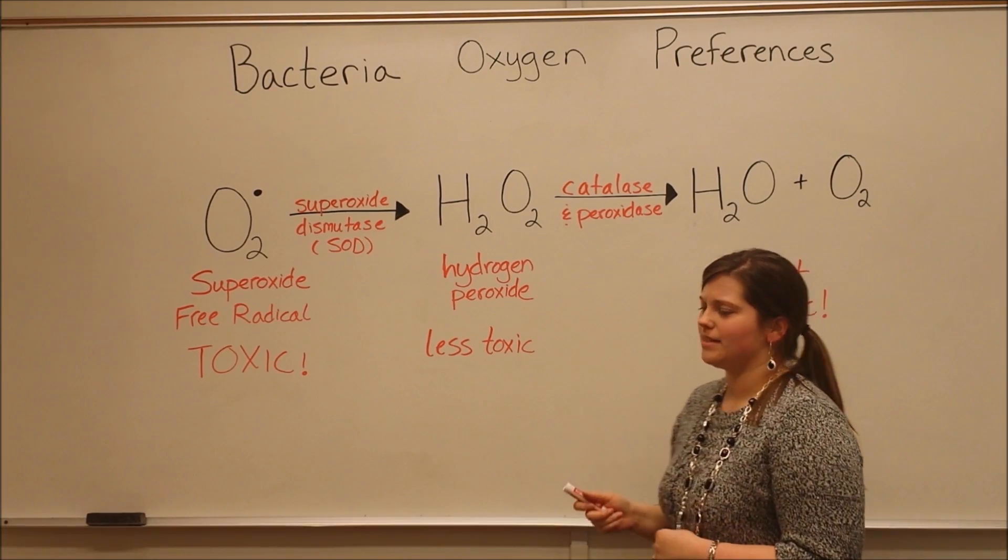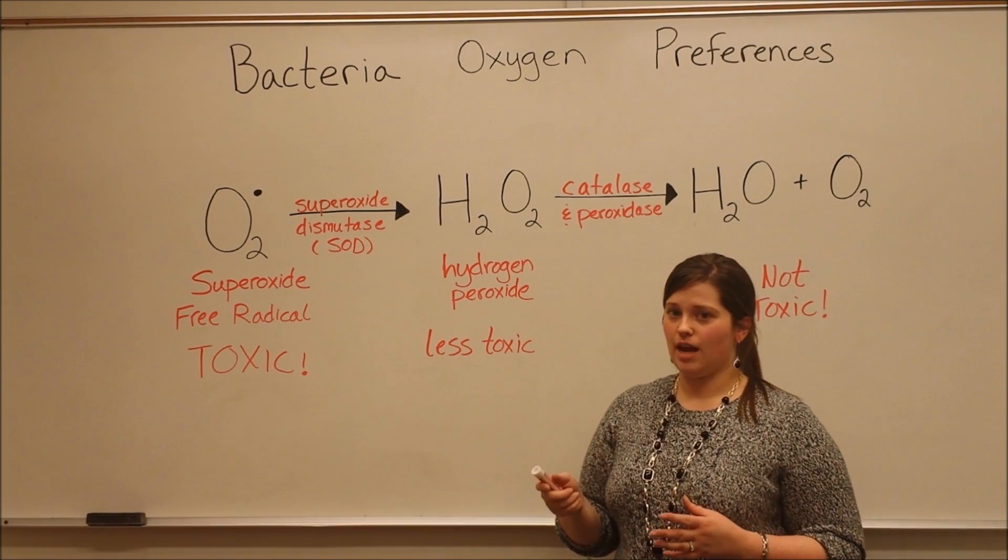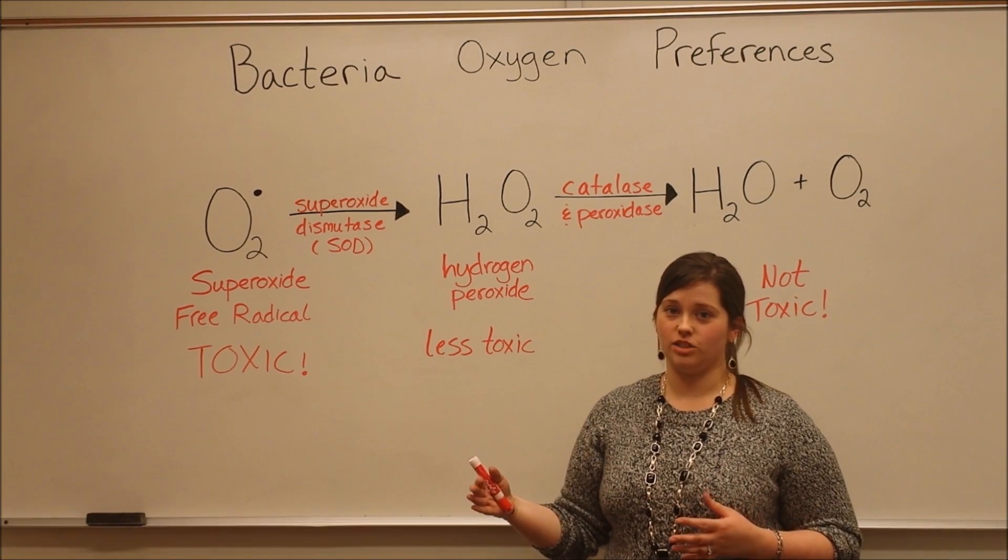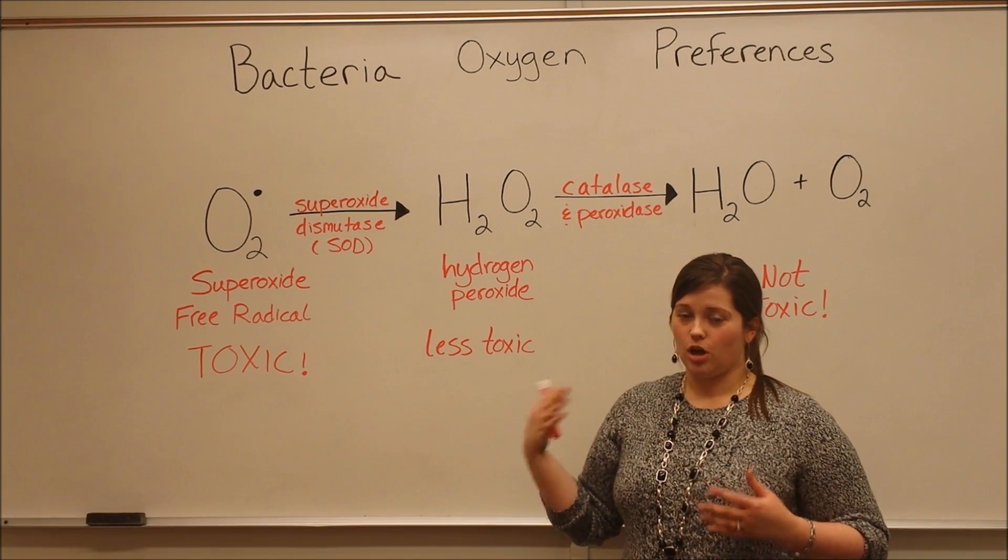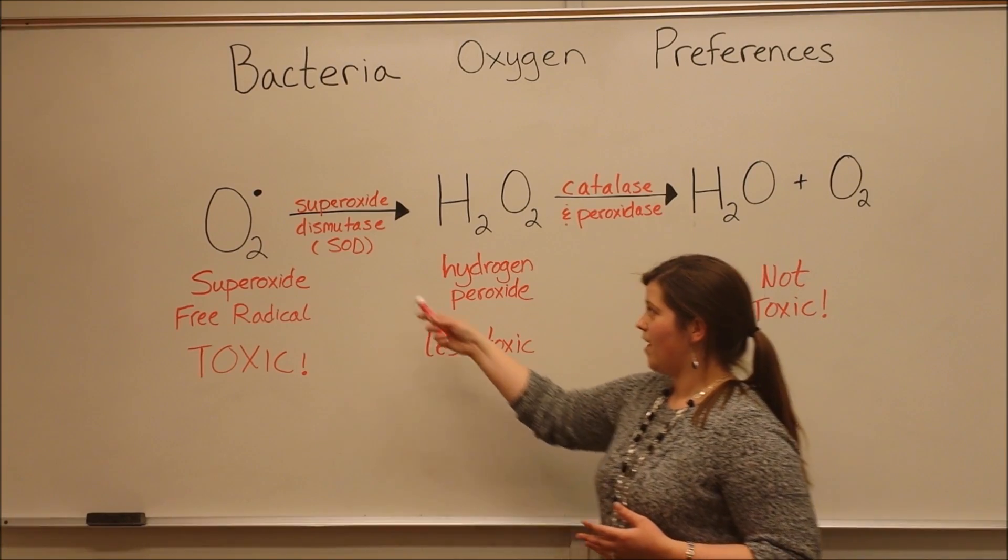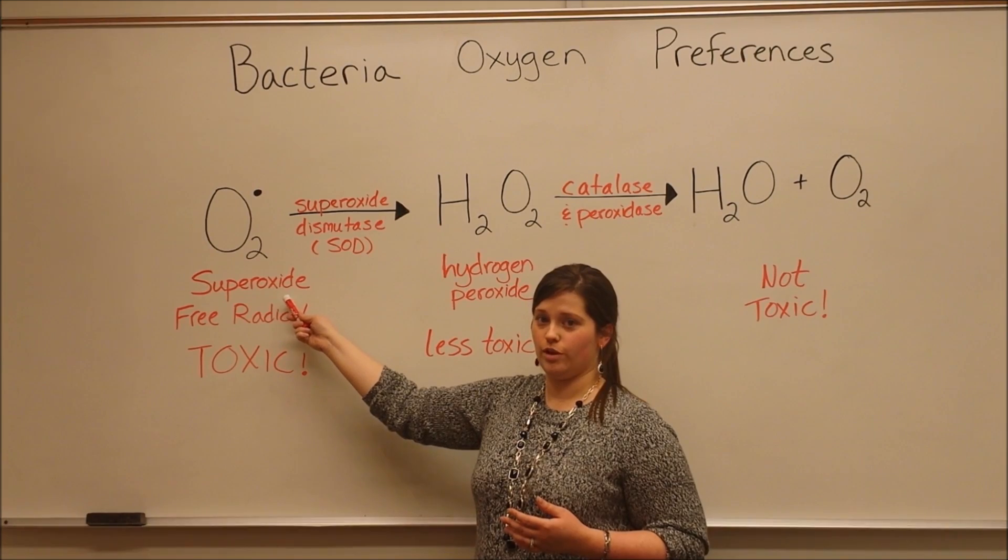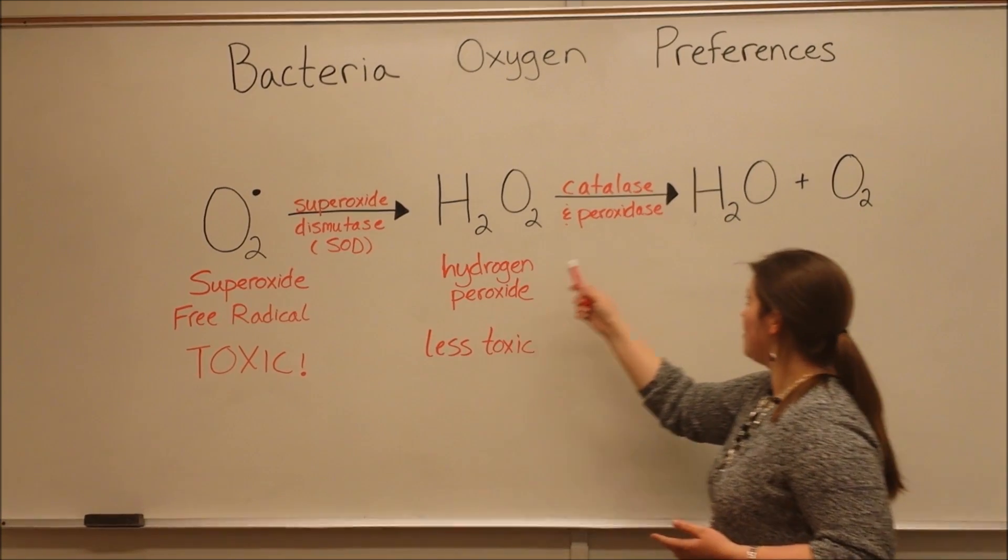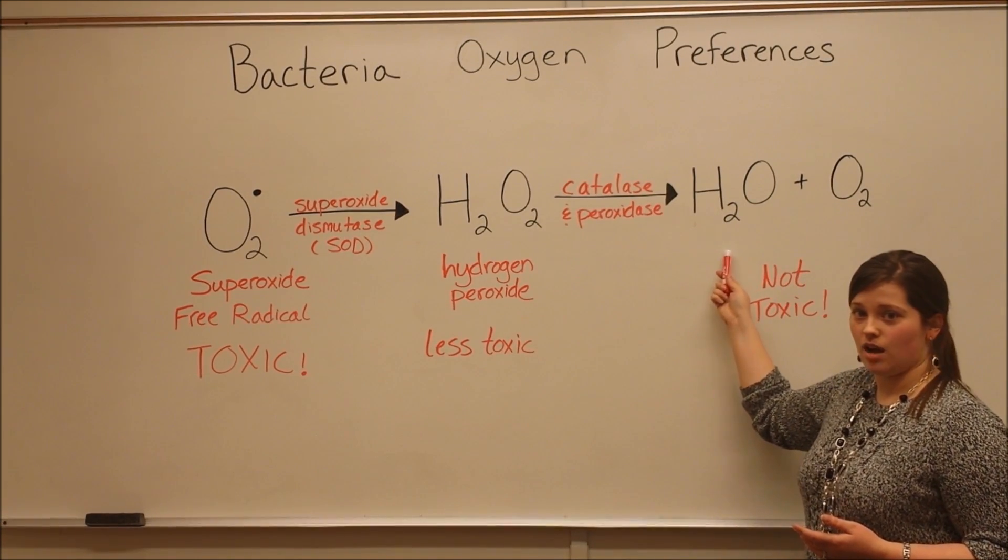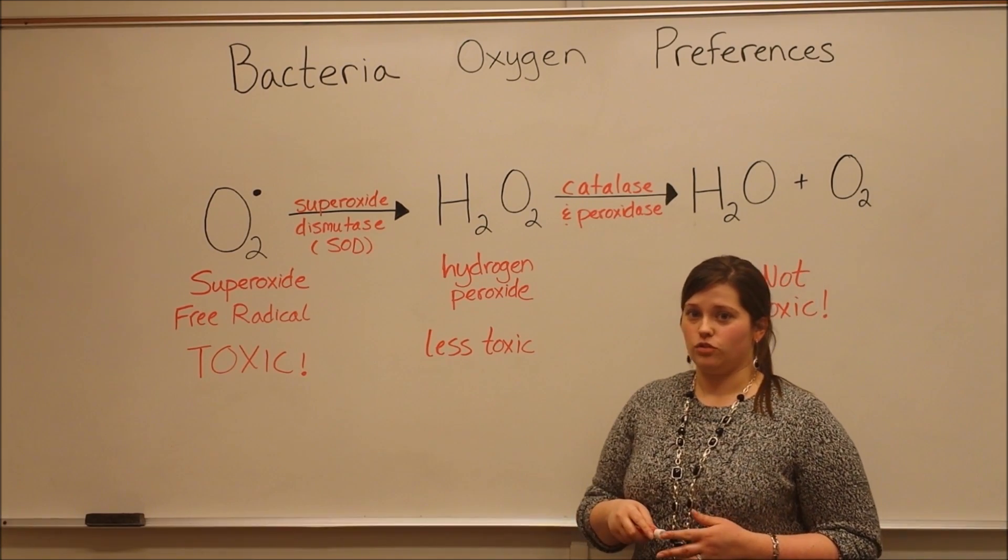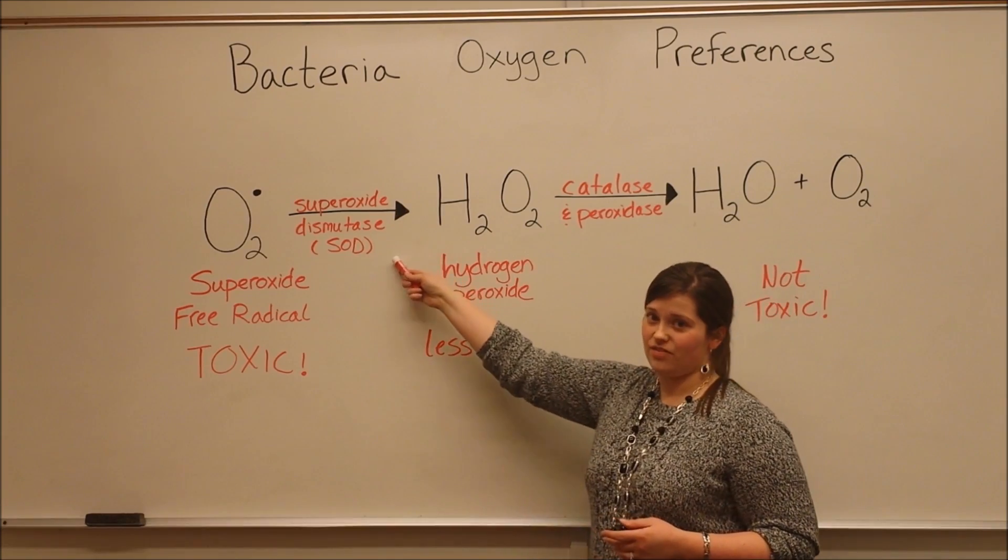And with those five different classes of bacteria, you have some, like these strict aerobes that require oxygen and tolerate oxygen very well. They have these enzymes. They're able to take these superoxide free radicals that are produced when they're making energy and then convert them down to products that are not toxic. Other types of bacteria, for example, these strict anaerobes, they don't have these enzymes.